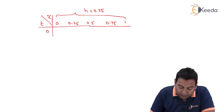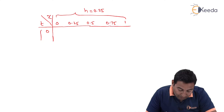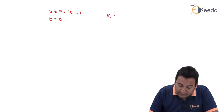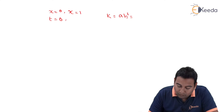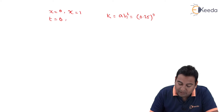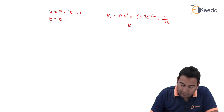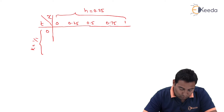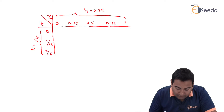In two steps for time t equals 0 — friends, two steps does not mean t = 0, 1, and 2; it depends upon the value of k. First of all we need to find the value of k. k = a·h², and since a = 1, we get k = h² = (0.25)² = 1/16. So in two steps of time: the first step is 1/16 and the second step is 2/16.